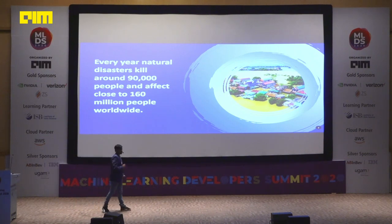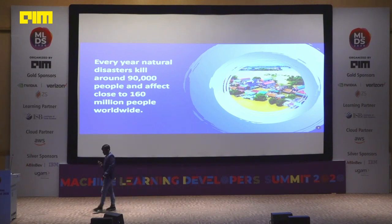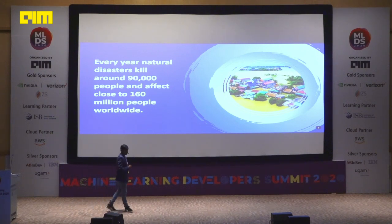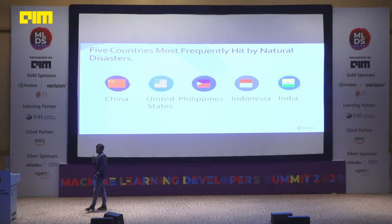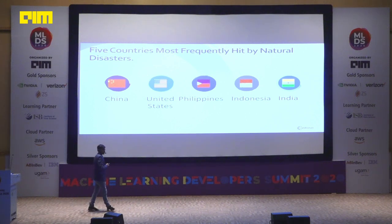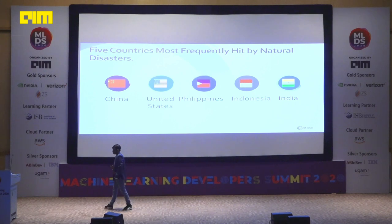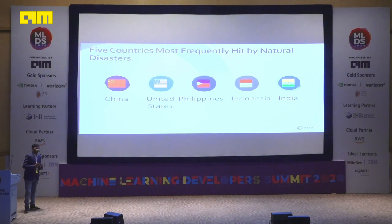Every year disasters kill around 90,000 people and affect around 160 million people worldwide — a horrible figure, and the actual figure is even more than that. According to the World Risk Index report, India is at number five among the most frequently disaster-hit countries, with China at number one, followed by the United States, Philippines, and Indonesia. But India is doing something relevant for data scientists and researchers, something in favor of mankind.